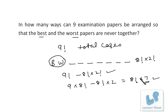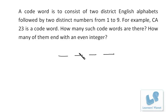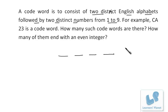Let's take the next problem. A code word is to consist of two distinct English alphabets followed by two distinct numbers from one to nine. For example, CA23 is a code word. How many such code words are there? We have four places: the first two are fixed for alphabets and the last two for numbers, because numbers cannot appear in the first two places.